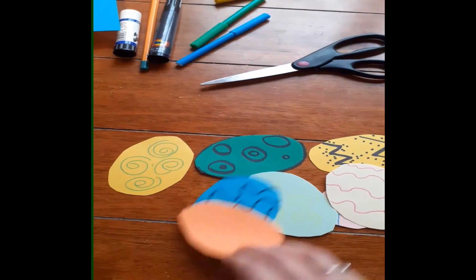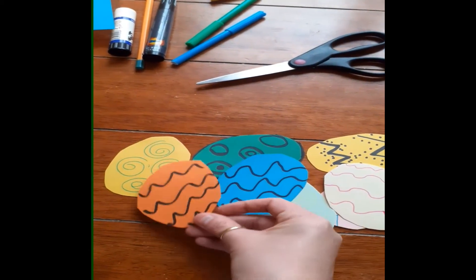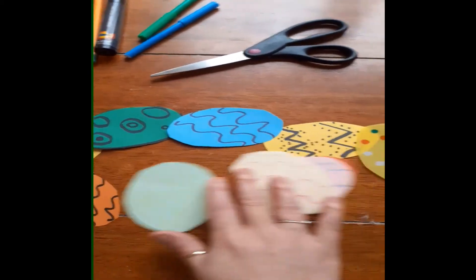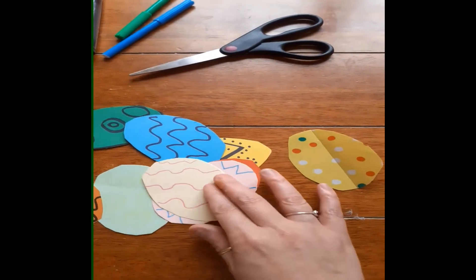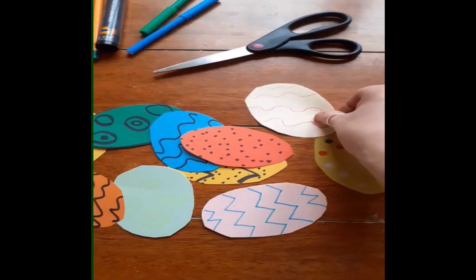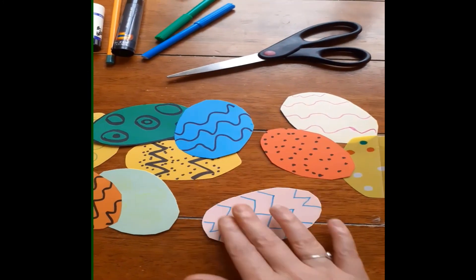Once you cut it out you can add your pattern using whatever media you would like to use. I've used felt tips. You can do whatever pattern you want to add on there.